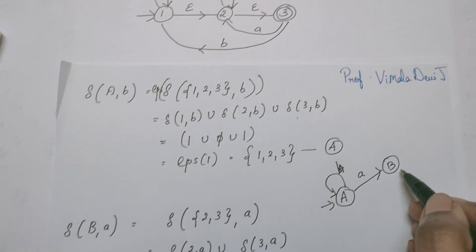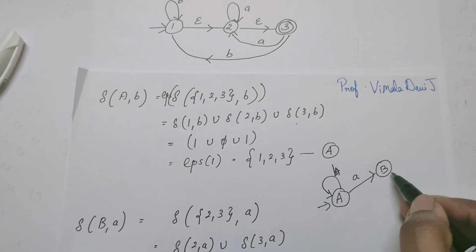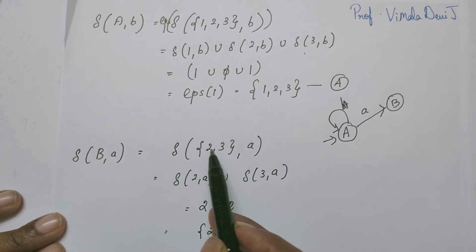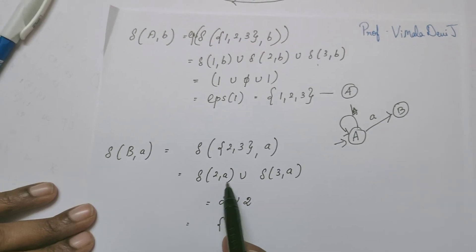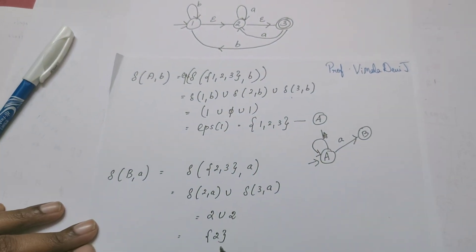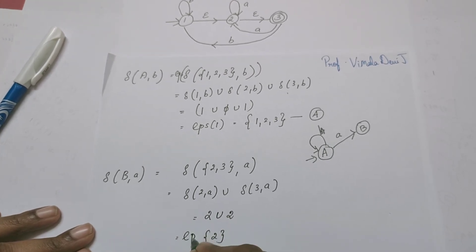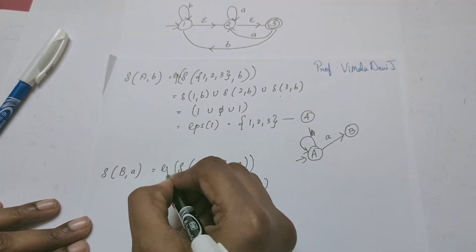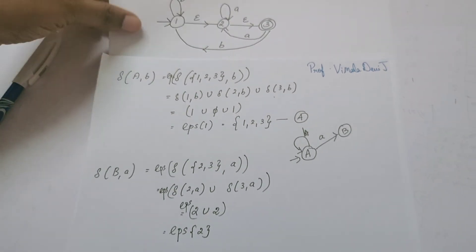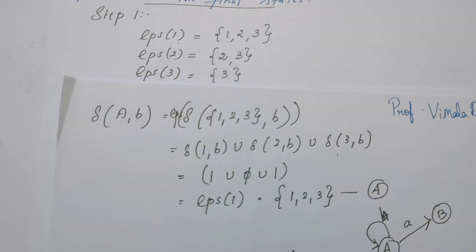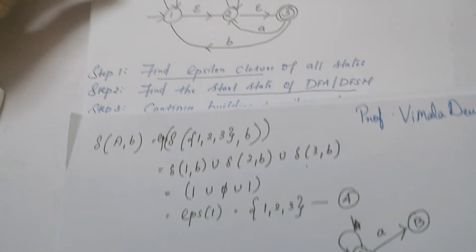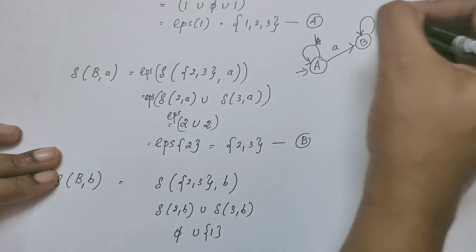Now from state B, define transition on input symbol A. B is {2, 3}. Find 2 on A (goes to 2) and 3 on A (goes to 2). Union gives {2}. Epsilon closure of 2 is {2, 3}, which is once again state B. So from B on reading A, it goes to B itself.